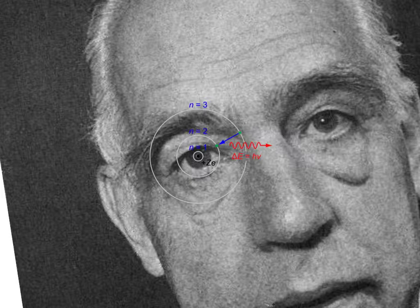They travel in circular orbits around the nucleus, similar in structure to the solar system, but with electrostatic forces providing attraction rather than gravity. The model depicts a hydrogen atom where the negatively charged electrons are confined to an atomic shell that encircles a small, positively charged atomic nucleus, and where an electron jumps between its orbit accompanied by an emitted or absorbed amount of electromagnetic energy.